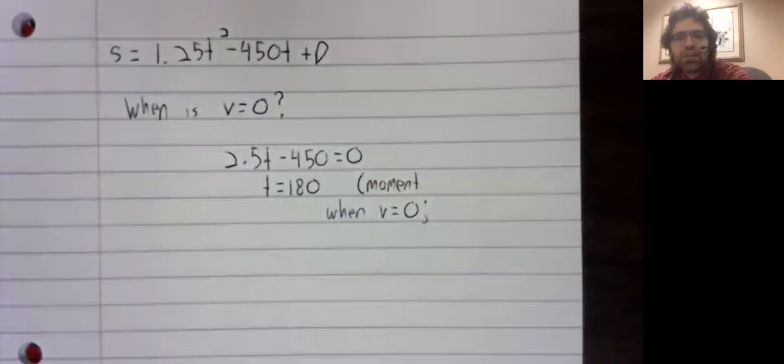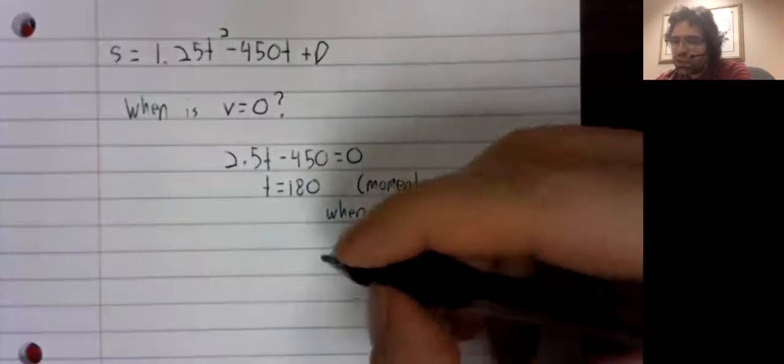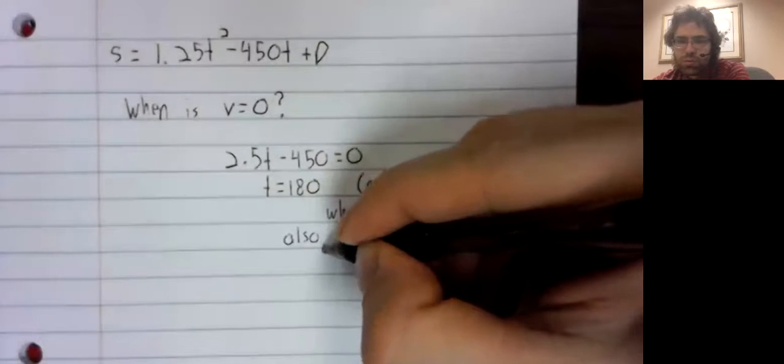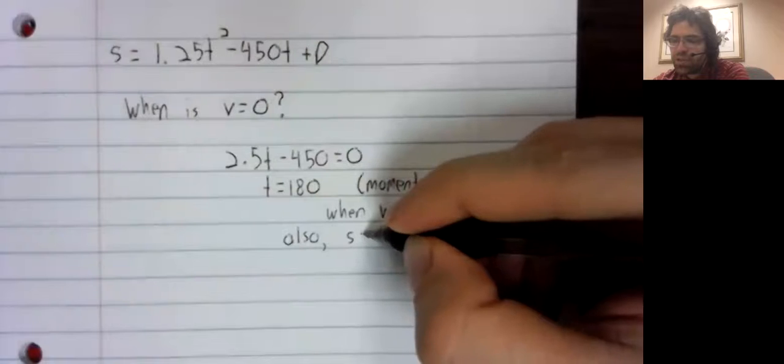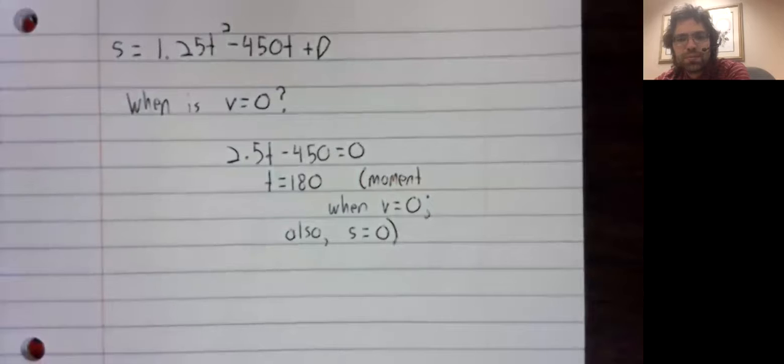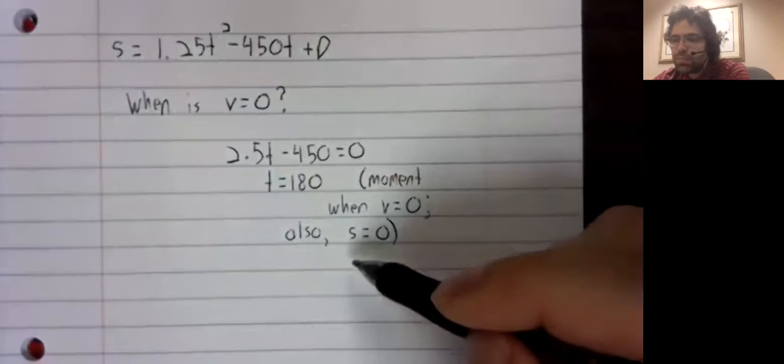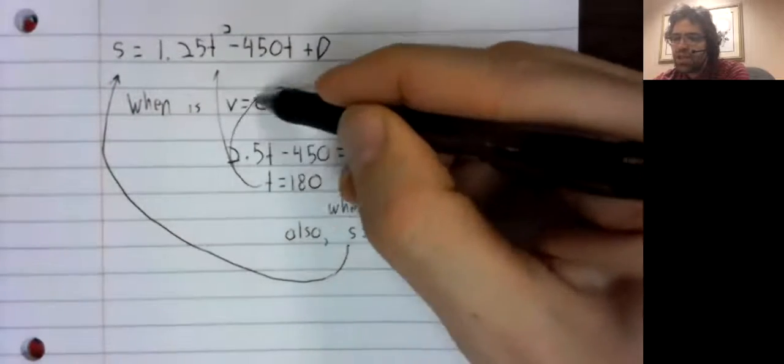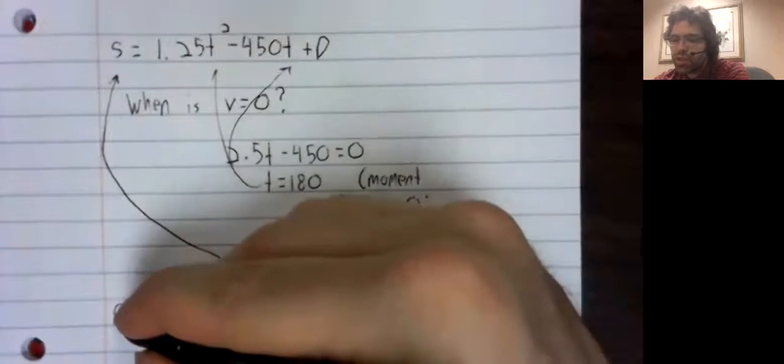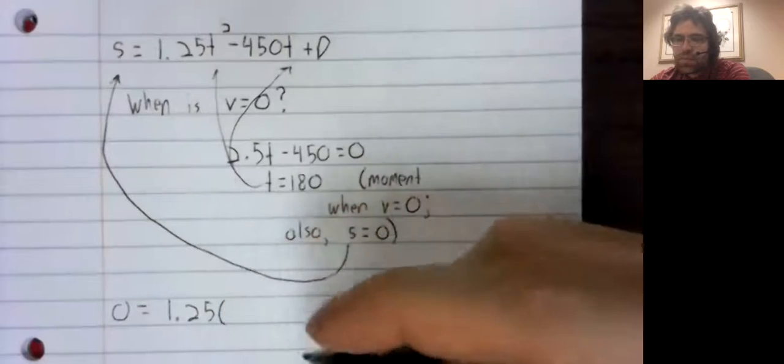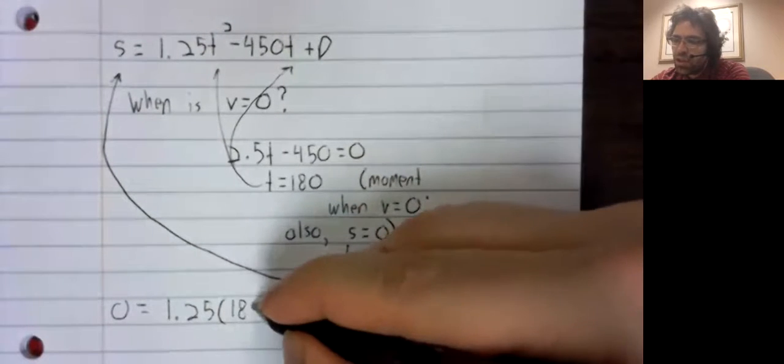This is the moment when the velocity equals zero. And the moment that the velocity equals zero is also supposed to be the moment when height is zero. So we'll plug height equals zero and T equals 180 into this equation.